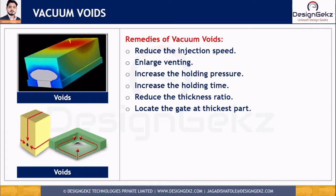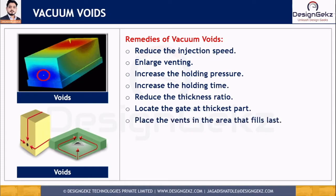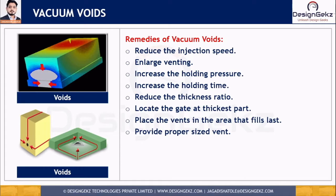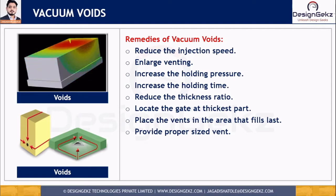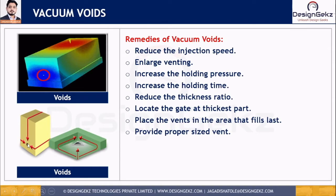Pay attention to the proper placement of vents. Place the vent in the areas that fill last and provide the proper vent size. Make sure the vent size is large enough so that the air present in the cavity can escape during injection. However, be careful when selecting the vent size, because too large a vent size can cause other defects like flash. It is recommended to keep the vent size in the range of 0.025 mm to 0.38 mm only. If the vent size is too large, the injected material under injection pressure may leak out from the vent area.